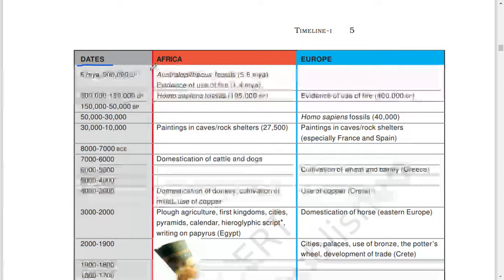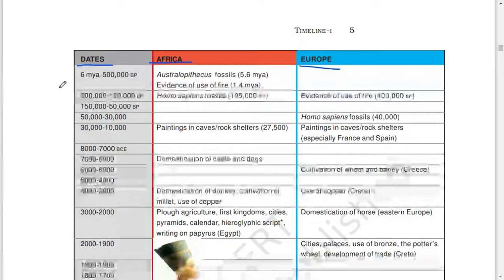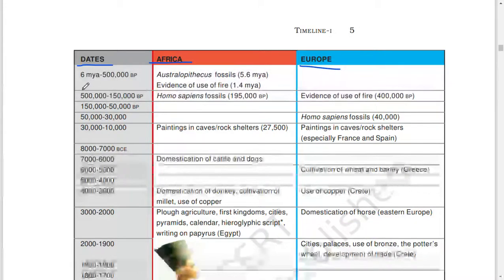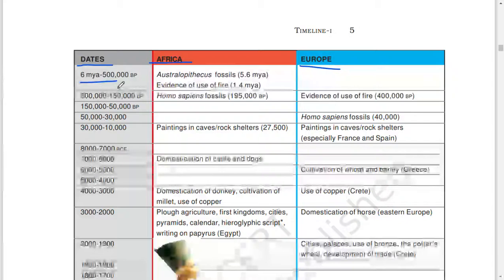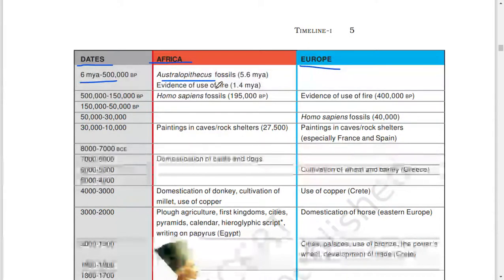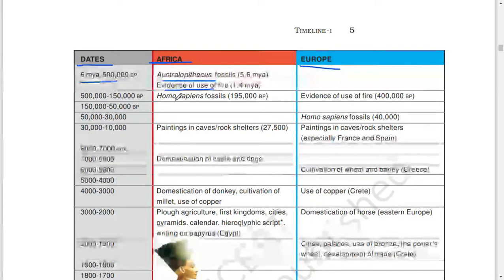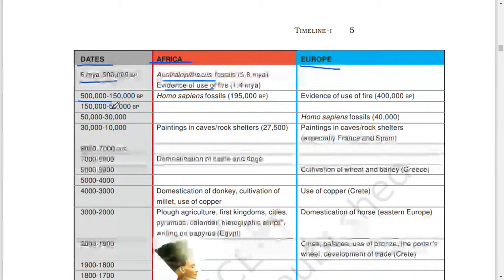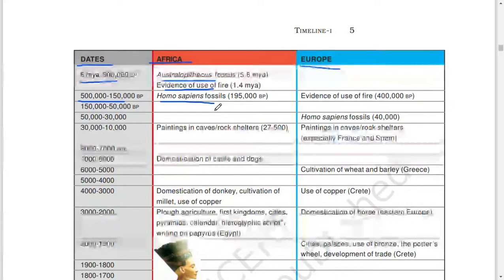Dates: Africa, Europe. 6 MYA to 5 lakh BP: Australopithecus fossils, 5.6 MYA. Evidence of use of fire, 1.4 MYA. 5 lakh to 1 lakh 50,000 BP: Homo sapiens fossils, 1 lakh 95,000 BP.